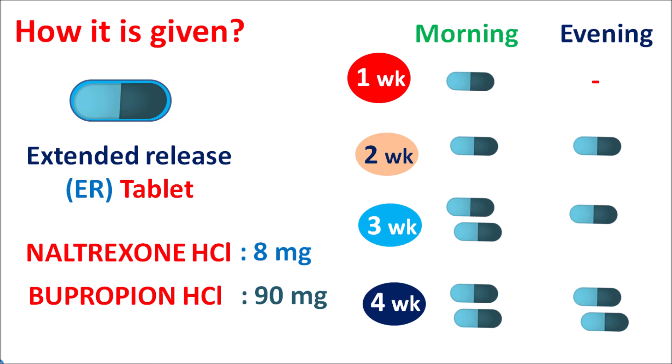At week four, the maximum dose is four tablets daily — equivalent to 32 mg of naltrexone and 360 mg of bupropion. Therapy should be continued at this dose until the effectiveness of the combination is observed. This naltrexone plus bupropion combination is effective for the chronic management of obesity.